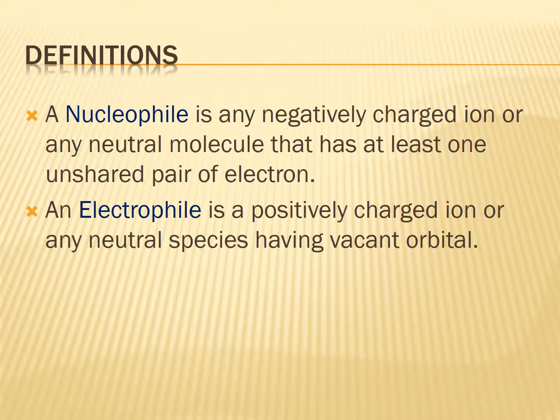An electrophile is a positively charged ion or a neutral species having a vacant orbital. If it has a vacant orbital, it will accommodate electrons, so it will be a positively charged ion — that is an electrophile.